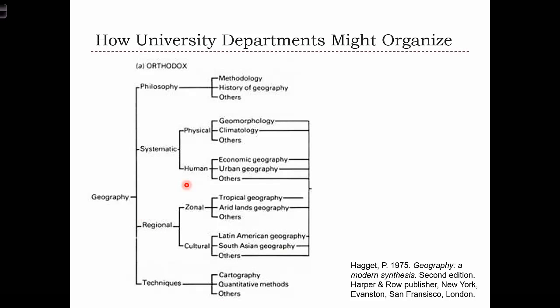In addition to having this divide of physical versus human — these systematic divides — a lot of geographers will also have some sort of regional focus as well. Those regional focuses can be termed as ecological zones: someone who studies polar ice caps, tropical geography, deserts, mountain regions. Or those regions might be cultural or human-generated regions, like Latin America, North America, or someone who focuses on the geography of Africa. So these are cultural divides.